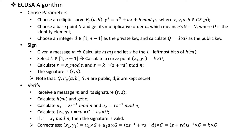Now let's see how this algorithm works. First we're going to choose some parameters. We need an elliptic curve denoted as E(P, A, B), defined by an equation over a finite field GF(P). GF(P) is a Galois field which has P elements, and the curve is defined over GF(P), meaning the parameters of the equation — X, Y, A, B — are elements from this finite field.